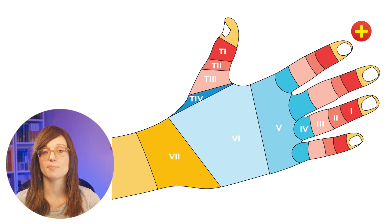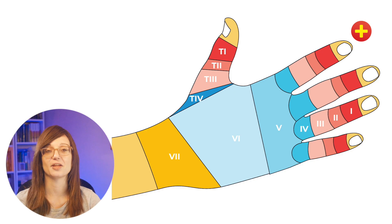It's worth noting here that the thumb also has a unique classification system because it's only got two bones, so one less phalanx than the other fingers.